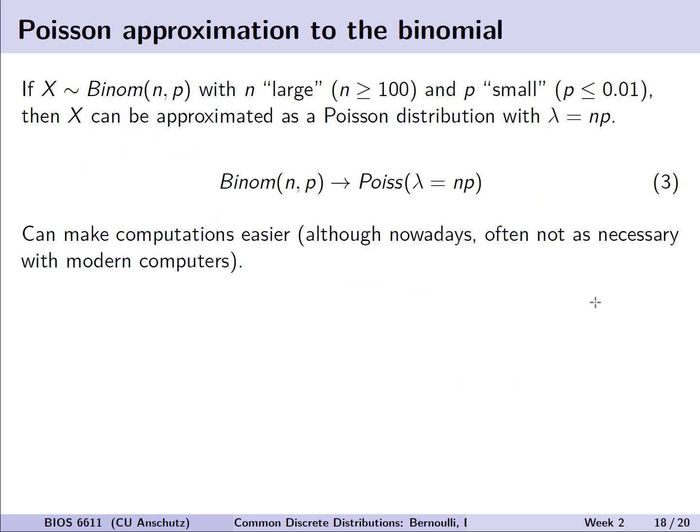One interesting thing about the Poisson and the binomial is that there's a relationship where the Poisson can be used to approximate the binomial. For example, if X is a random variable distributed as a binomial with n and p, and we say that n is large, usually something like 100 or more, and the probability p is small, usually something less than 0.01, then X can actually be approximated as a Poisson distribution where lambda is equal to n times p.